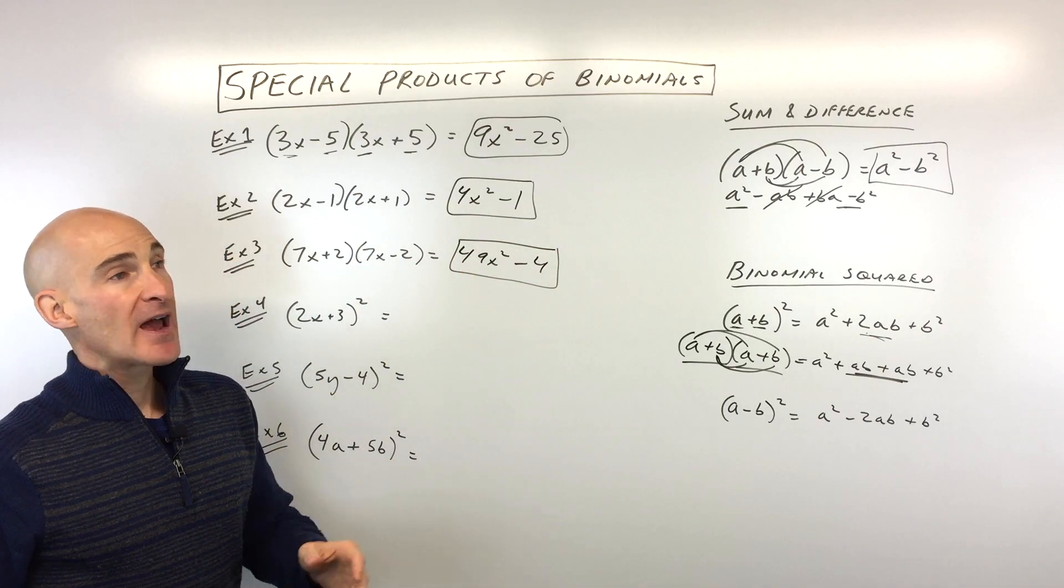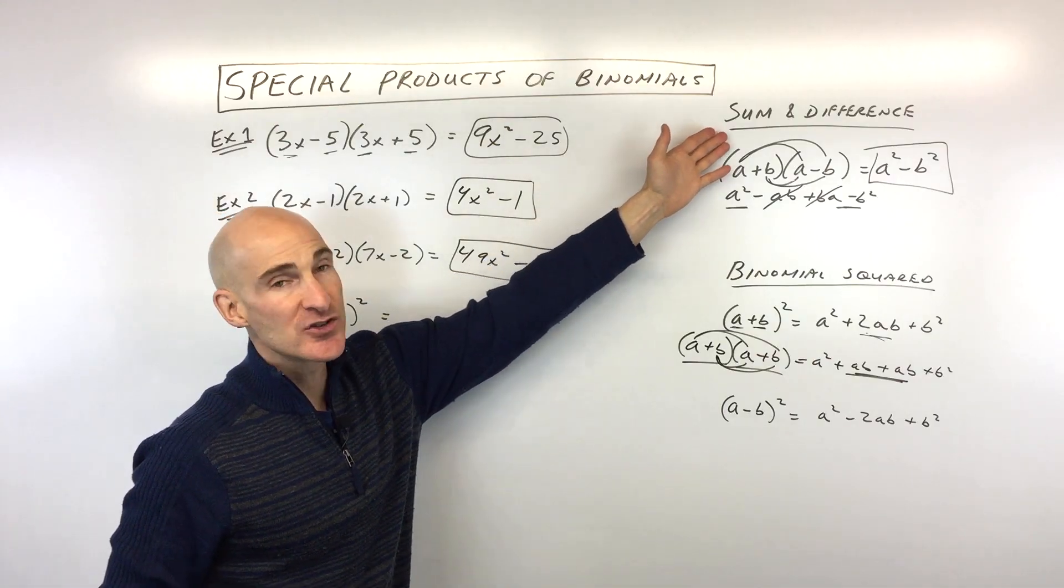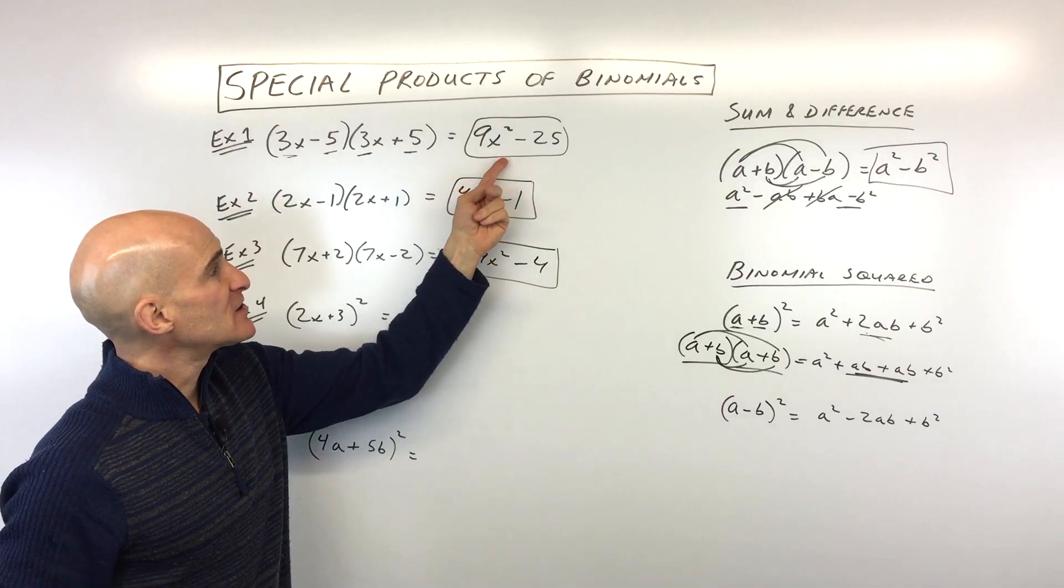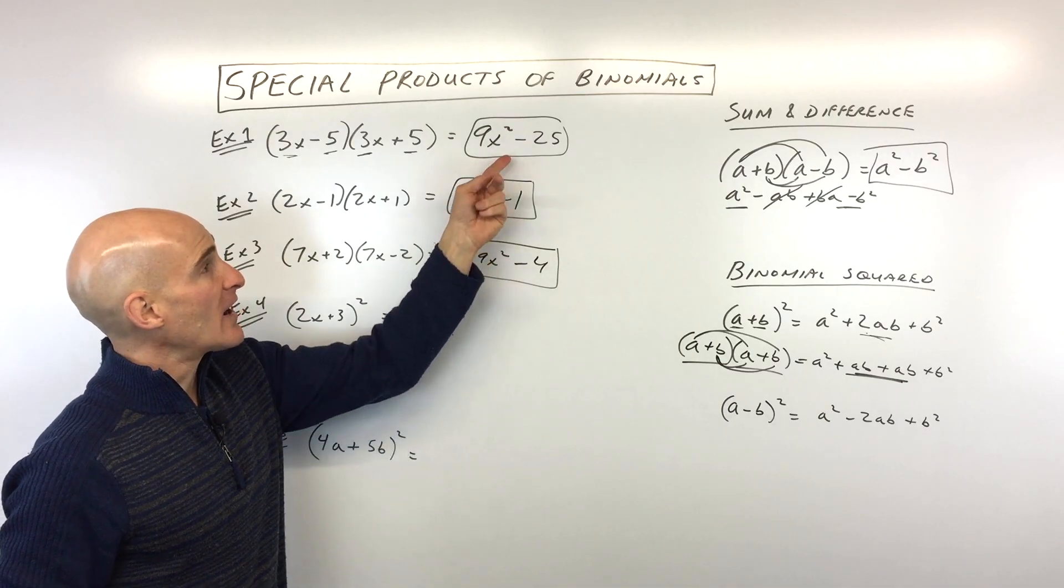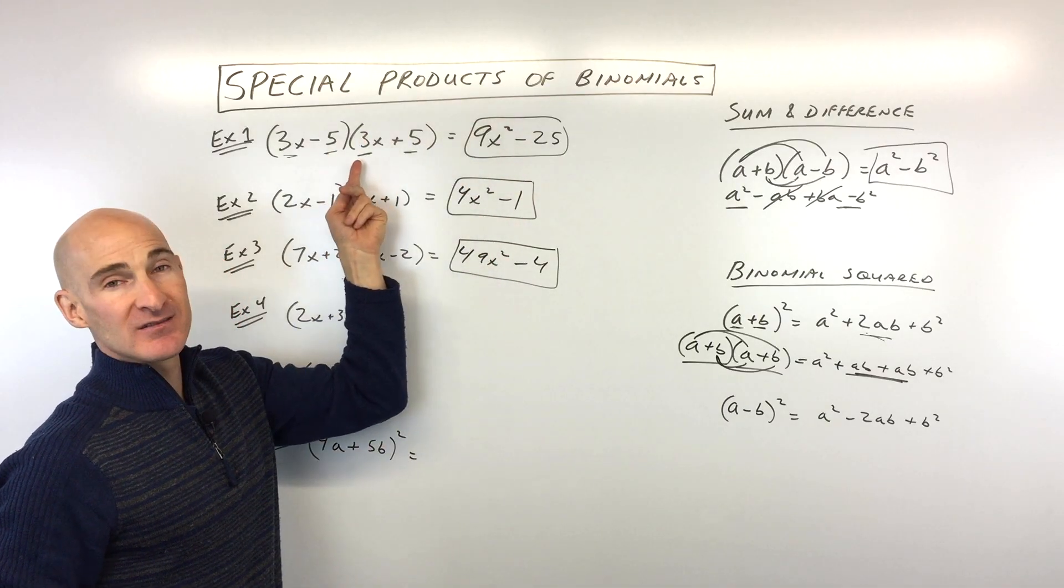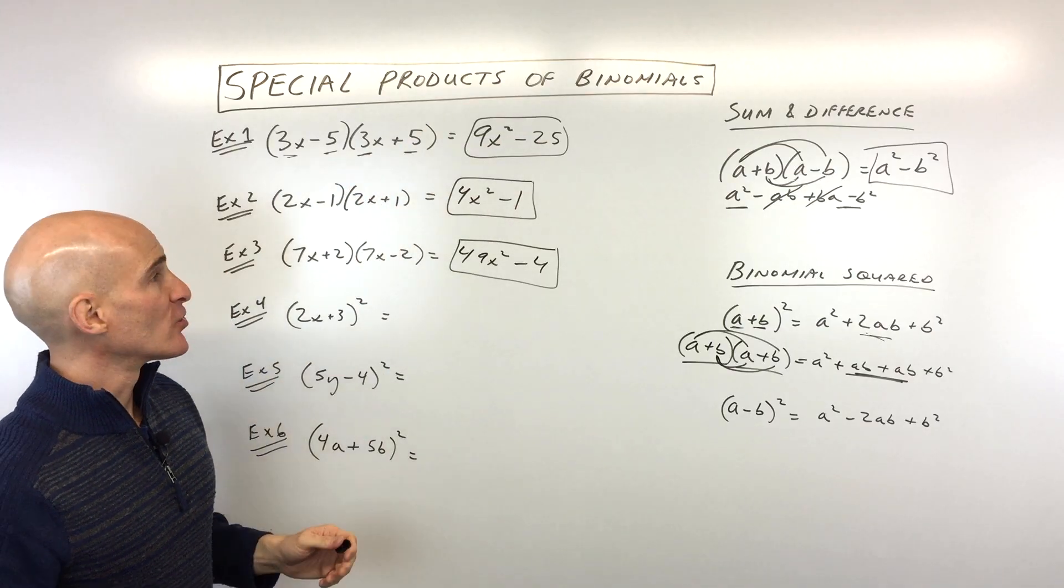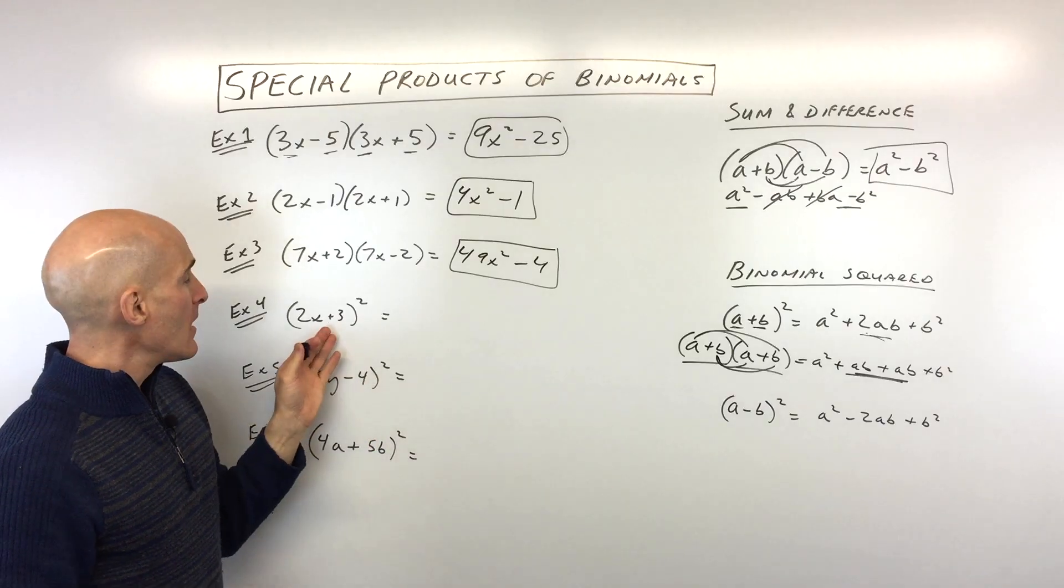Now, the reason that your teacher and your class are studying these special patterns with the sum and difference and the binomial squared is so that when you see it in this form, you'll recognize it. You'll be able to factor it, meaning going backwards, into this form here. So that's the reason that you're learning these techniques right now at this point.